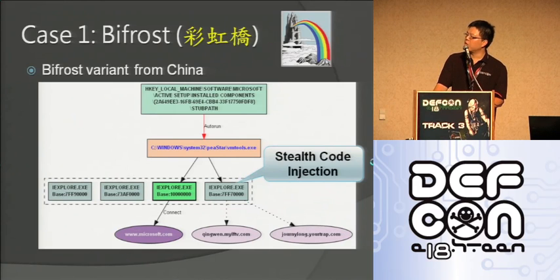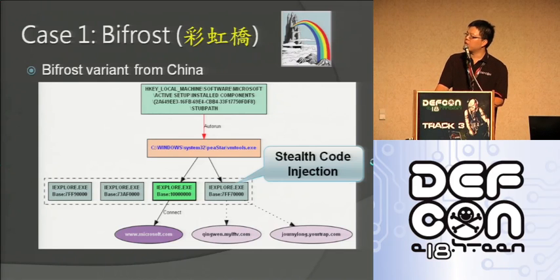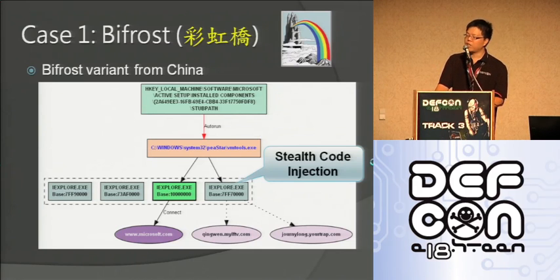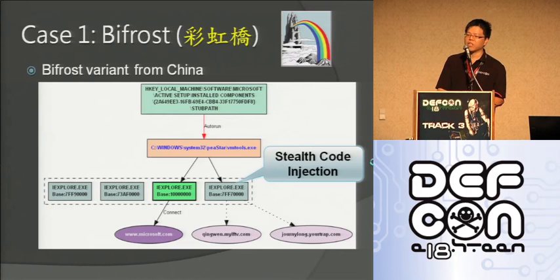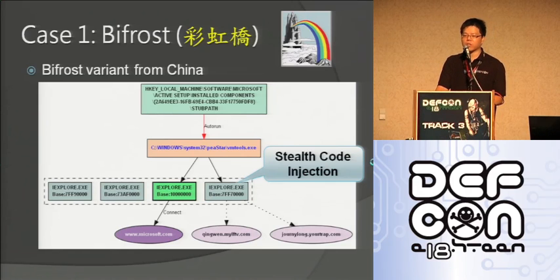The first technique is BeFrost. You've already seen this in the previous slides. This is a very famous bot used in the Chinese hacker community. Its Chinese name is called Rainbow Bridge, which comes from the icon being used — you can see the icon is a rainbow bridge. BeFrost uses code injection, not DLL injection.